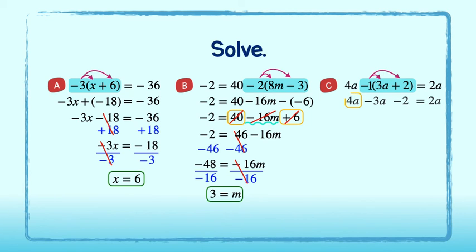Now, we can identify like terms by circling them. 4a minus 3a is equal to 1a. Negative 2 is by itself, and I will copy down the rest of the problem. Lastly, I will subtract a from both sides to get negative 2 equal to a. Good job!